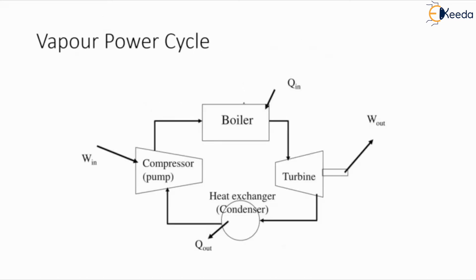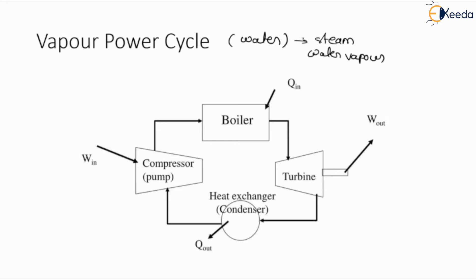In vapour power cycle, the working fluid is always considered as water. We cannot use water directly for power generation — first we need to change the phase of water. This water will further convert into steam or water vapour. There are various phase changes we have to consider during the whole process, and water in different phases is used to generate power or convert heat into work.